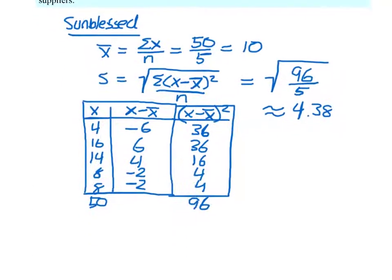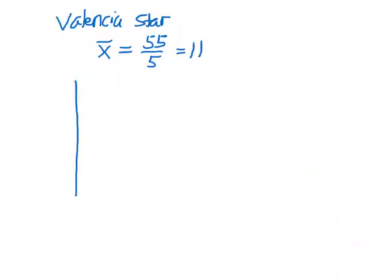Now we're going to look at the Valencia Star samples. And it's the exact same process. So first I need the mean, which is going to be 55 divided by 5, which equals 11. And then for the standard deviation, I need a table.